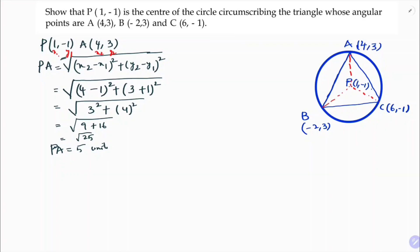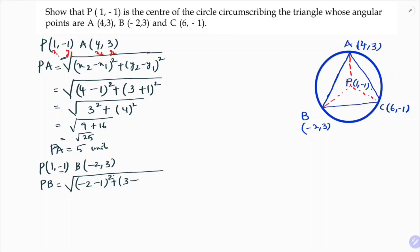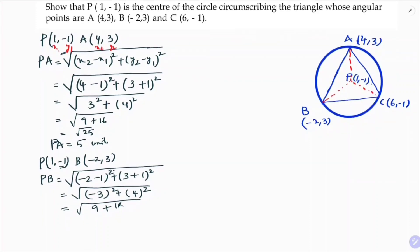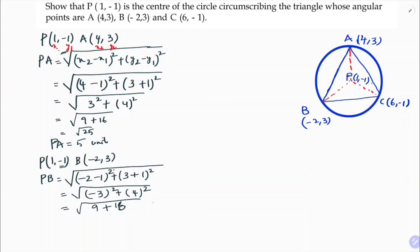Now I'll find PB. P is (1, -1) and B is (-2, 3). PB = √[(-2 - 1)² + (3 - (-1))²] = √[(-3)² + 4²] = √[9 + 16] = √25 = 5 units. So PA and PB are both found.